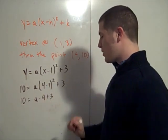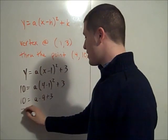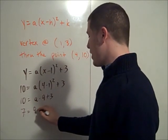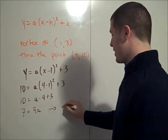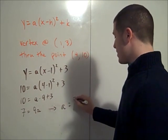We subtract 3 from both sides. We find that 7 is 9 times a, and then divide both sides by 9. This implies that my a value is 7/9.